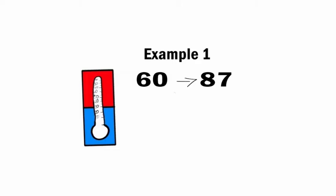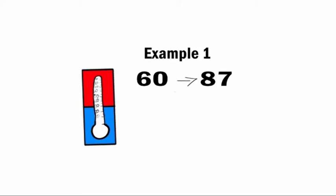So if it went from 60 to 87, what ended up happening? Did it get colder? No. It got hotter because the number got further away from zero, and the number got bigger.